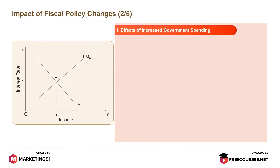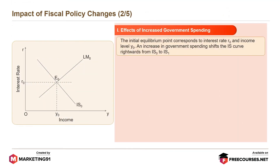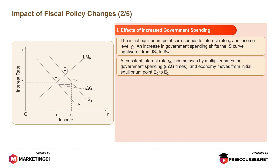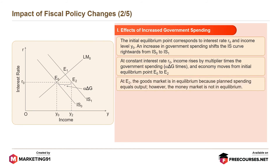To explain graphically, the initial equilibrium point corresponds to interest rate R0 and income level Y0. An increase in government spending shifts the IS curve rightwards from IS0 to IS1. At constant interest rate R0, income rises by multiplier times the government spending (delta G), and the economy moves from initial equilibrium point E0 to E2. At E2, the goods market is in equilibrium because planned spending equals output.